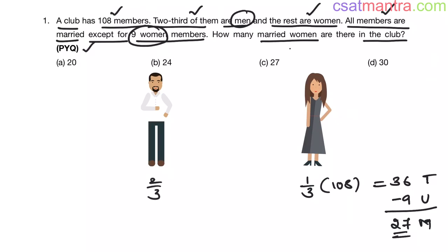We are asked to find number of women who are married. So our answer is C. Very simple question my friends. Men are two-third, then women will be one-third of total members. Out of them 9 women are unmarried. So married women will be 36 minus 9.